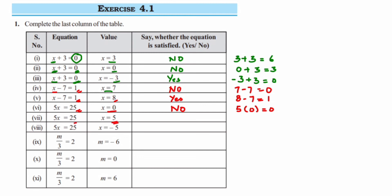Next, x is equal to 5. When you substitute here, 5 into 5 is 25, and here on the RHS also they have given us 25, so we can say yes, this is an equation. Next, x is minus 5, so 5 into minus 5 is minus 25. But here they have given us simply positive 25, so this is no.